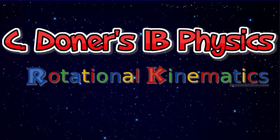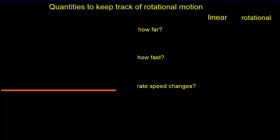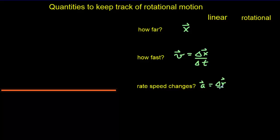Let's take a look at rotational kinematics. Earlier in the course we studied linear kinematics and there were three basic quantities that kept track of the motion of objects. One kept track of where the object is and in what direction — that was the displacement. A second tracked how fast the object was moving — the velocity — equal to the rate of change of displacement. And a third kept track of how fast the speed was changing — the acceleration — equal to the rate of change of velocity.